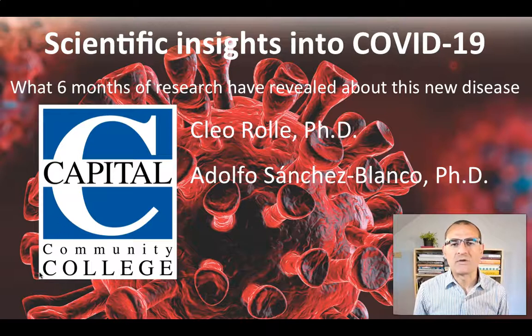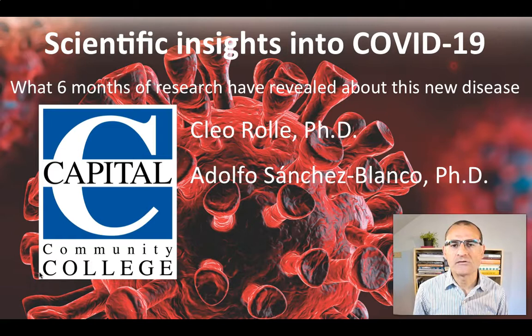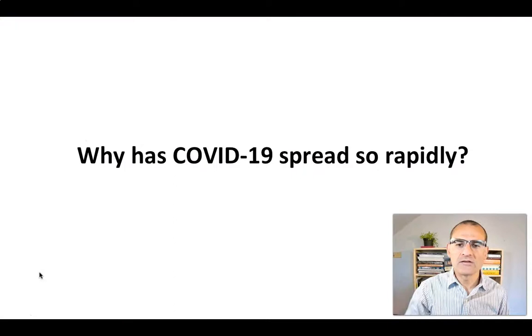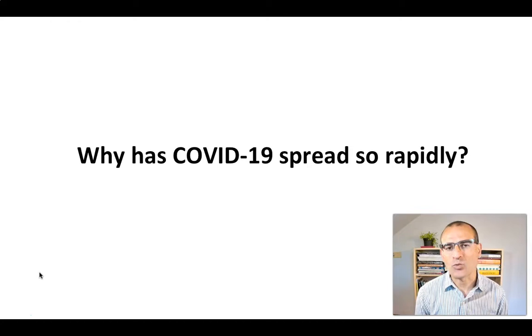Hi, my name is Adolfo Sánchez Blanco and I'm one of the biology professors at Capital Community College. In this series of videos we're going to discuss various scientific insights into COVID-19. Specifically in this video we're going to try to get answers to the question of why has COVID-19 spread so rapidly.